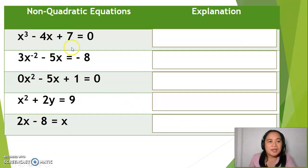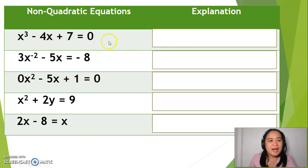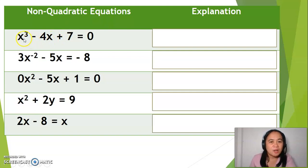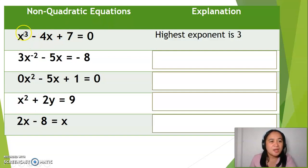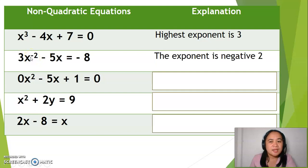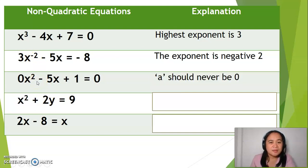These are examples of non-quadratic equations. Let's identify the reasons why all five are considered non-quadratic. Number 1 is not quadratic because the highest exponent is 3. The second example is not a quadratic equation because the exponent is negative 2. And number 3 is not quadratic because the value for a is 0.